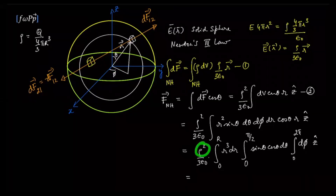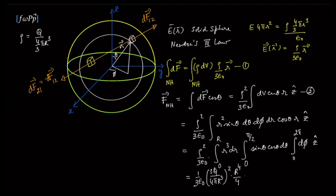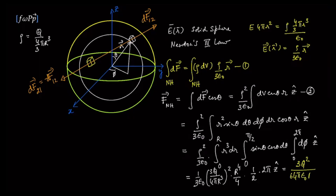Substituting density in terms of the charge and the radius: rho equals 3q divided by 4 pi r cubed. The integral of r cubed gives r to the power of 4 divided by 4. The sin theta cos theta integral is like sin theta d(sin theta), giving sin squared theta over 2, which contributes a factor of one half. The phi integral gives a factor of 2 pi. Collecting all terms, the result is 3q squared over 64 pi epsilon naught r squared, along the direction of the z-axis.